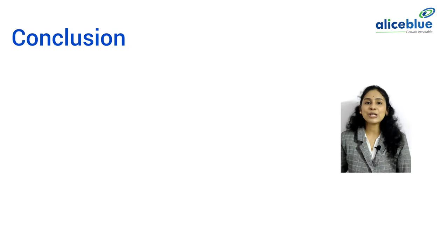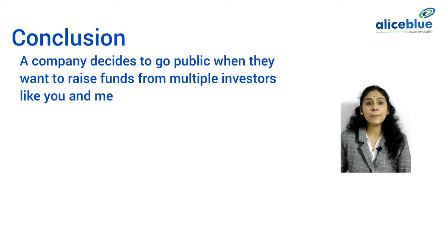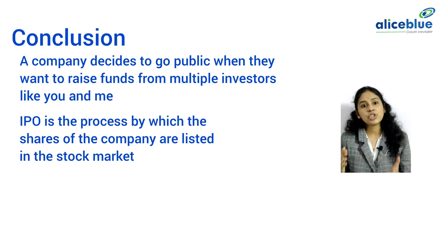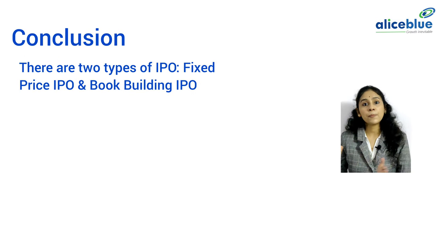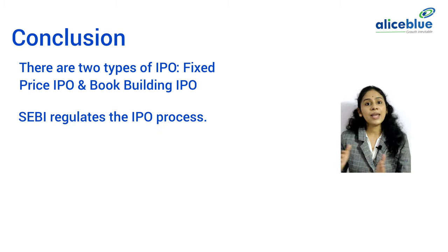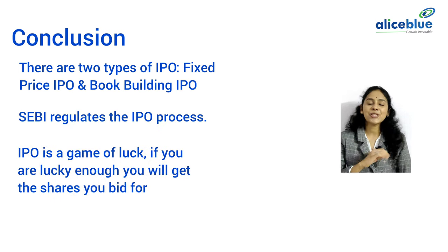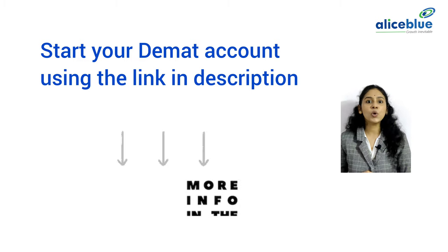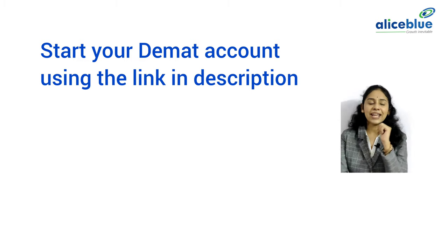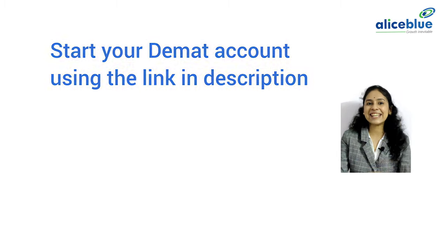In conclusion, a company decides to go public when they want to raise funds from multiple investors like you and me. IPOs are the process by which shares of a company are listed in the stock market. Investing in an IPO can be risky as you are not aware of the company's prior performance in the market. There are two types of IPOs — fixed price IPOs and book building IPOs. SEBI regulates the whole IPO process. IPO is a game of luck; if you are lucky enough, you will get the shares that you bid for. Now that you have a very clear understanding of investing in IPOs, start your first investment now with Alice Blue using the link in the description, and try if you are lucky enough to get allotments and listing gains through IPOs.